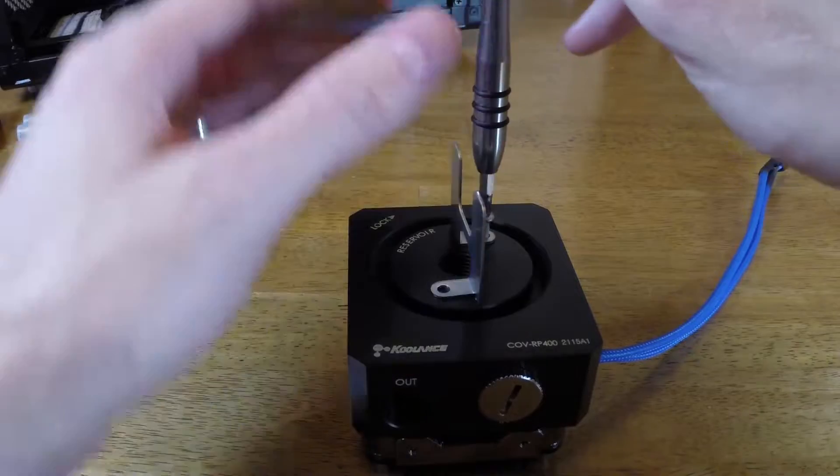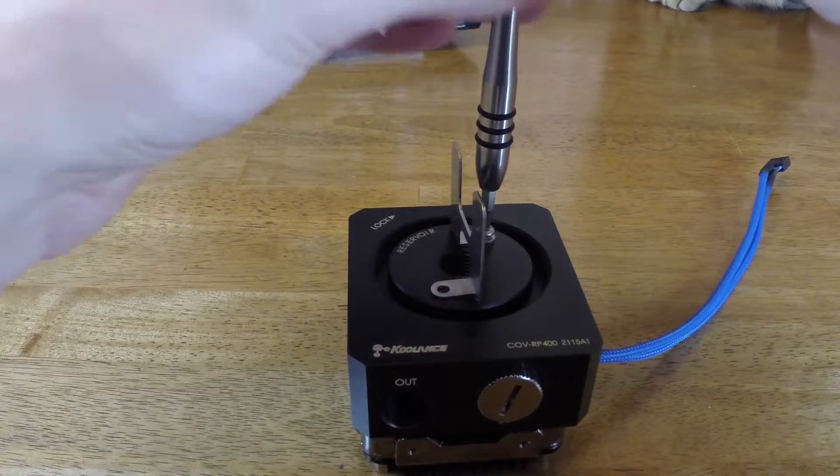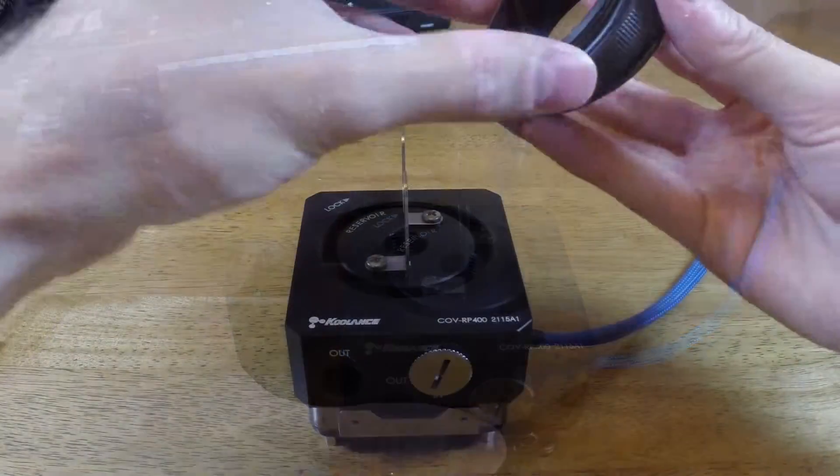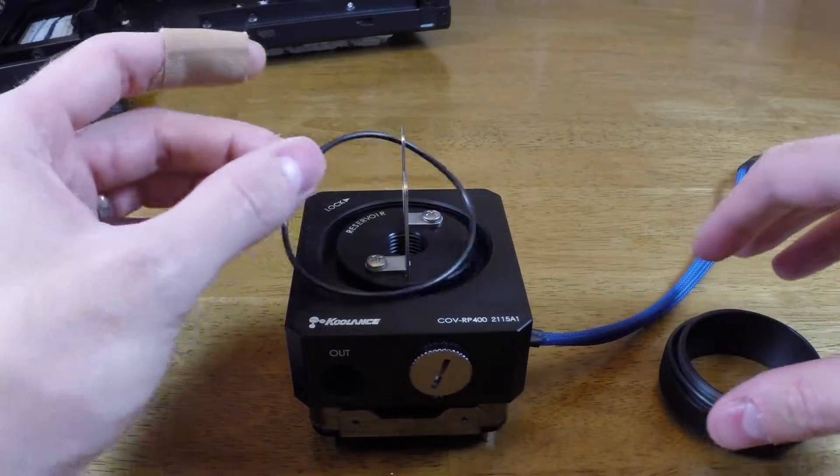The Coolant pump top has this extra metal piece in it to prevent swirling of the water inside the reservoir. So, your pump top may have something similar.